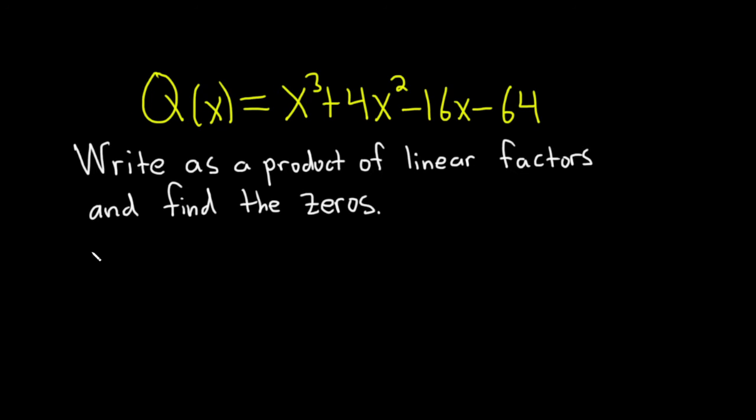Okay, so let's go ahead and try to do it. Solution. I'm going to start by just writing down the polynomial again. So we have Q(x) equals x cubed plus 4x squared minus 16x minus 64.